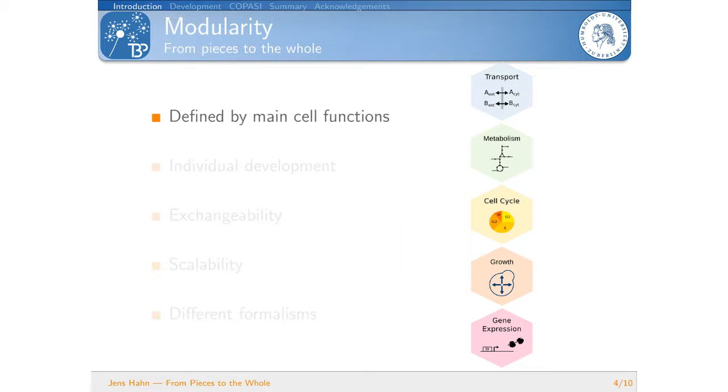Now what is the advantage of a modular approach? As I said we divide the cell into these main cell functions. Well first of all you can develop these modules individually. So we have some kind of task forces or group work and the experts can really focus on their particular cell processes and do not need to be bothered with all the other modules as soon as the interfaces with the other modules are defined. So we define the interfaces between metabolism and cell cycle and then our people can work on the metabolism module and do not need to know what is happening in the cell cycle model because the interface is defined beforehand.